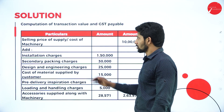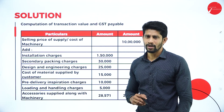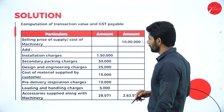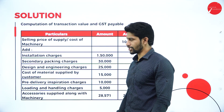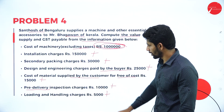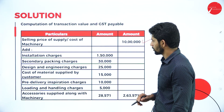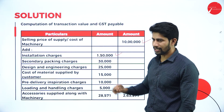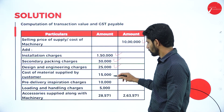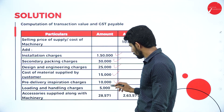While computing the value, you must deduct the 5% tax from Rs. 30,000 and add only the remaining amount. The applicable GST is 18%, so after finding the transaction value, compute CGST 9% and SGST 9%. For the computation: selling price of the machine is Rs. 10,00,000 in the outer column. Add installation charges, secondary packing charges, design and engineering charges Rs. 25,000, cost of material supplied by customer Rs. 15,000, pre-delivery inspection charges Rs. 10,000, and loading and handling charges Rs. 5,000.